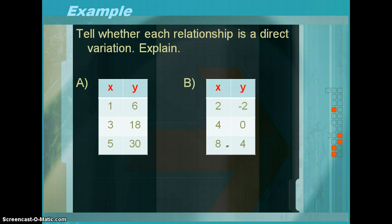Example: tell whether each relationship is a direct variation. Explain. First thing, y is equal to kx represents a direct variation, where k was the constant of variation. That means that k is equal to y divided by x.